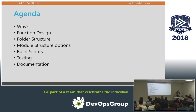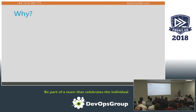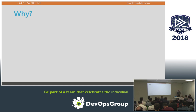Quick agenda: we're going to look at why we care about all of these best practices or good practices or whatever you want to call them. We'll look at function design, a bit on folder structure, module structure, some talk about build scripts, and a quick overview of testing and documentation. The why is not necessarily often missed, but it's not talked about enough, and I feel like you lose something if you don't talk about it.